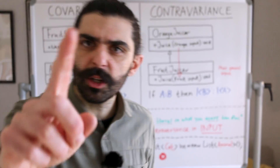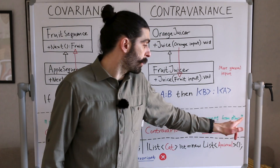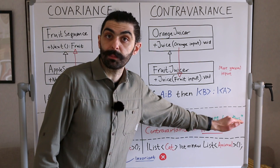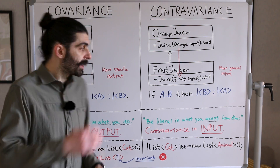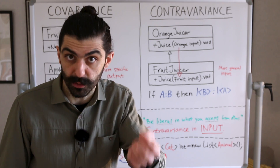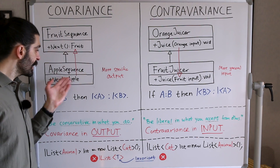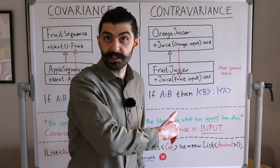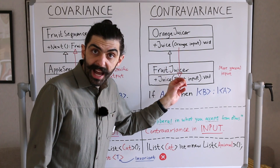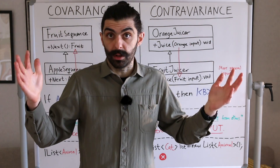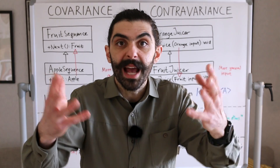Another way to remember this rule is the robustness principle: be conservative in what you do and be liberal in what you accept from others. If I am the subtype, I must return either items of the same type my supertype returns or a subtype — something more specific — so users of my type won't be surprised. On the contravariant side, be liberal in what you accept: as the subtype, I must take objects of the same type as my supertype or something more general, so that users aren't surprised when they use me as if I were the supertype. This gives us substitutability.